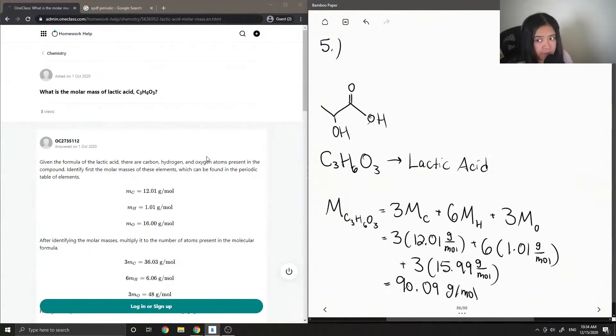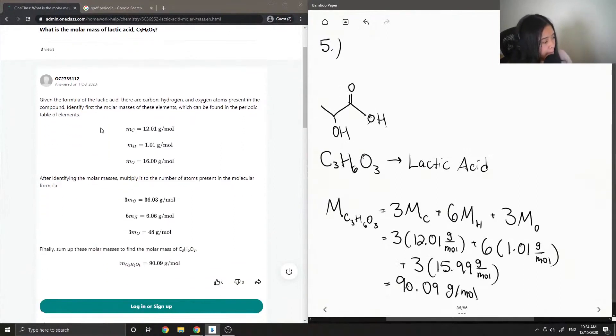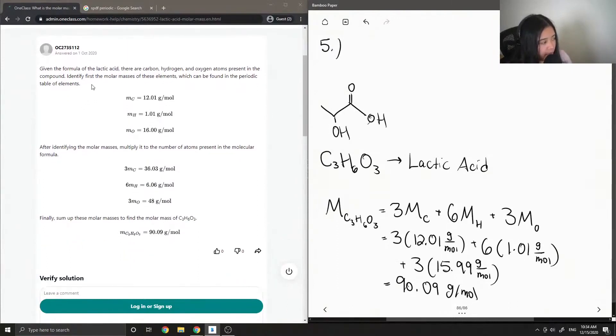Okay, so let's see what the junior tutor said. Given the formula of lactic acid, there are carbon, hydrogen, and oxygen atoms present in the compound. Identify first the molar masses of these elements, which can be found on the periodic table.